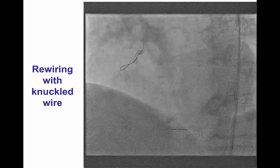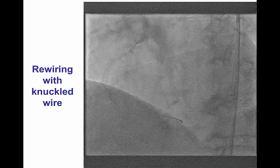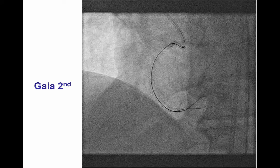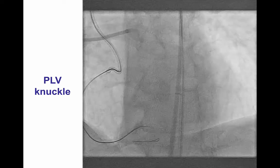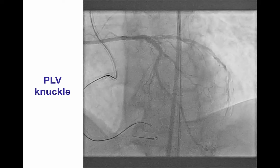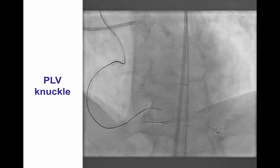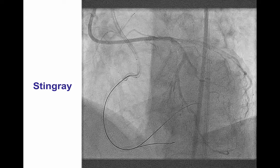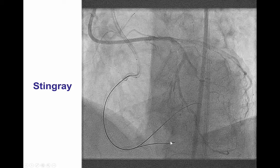As a result, we decided to attempt again to see if we could rewire and restore flow in the posterolateral vessel. We tried several wires, including the Gaia second, as well as a knuckled Fielder XT guide wire, and finally a stiff wire, which however went subintimal, and then we eventually ended up using the Stingray balloon to re-enter.